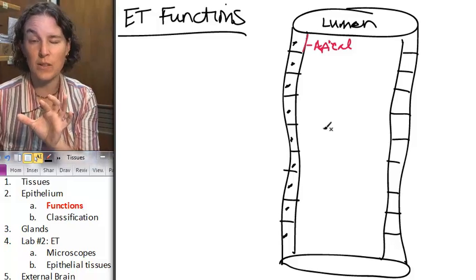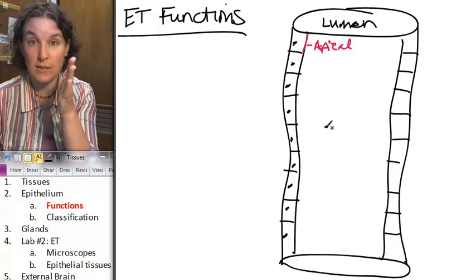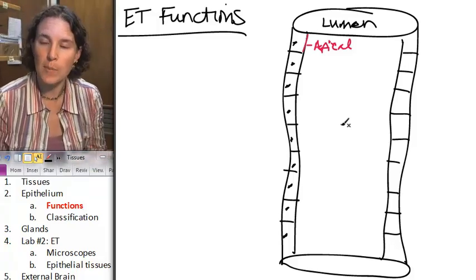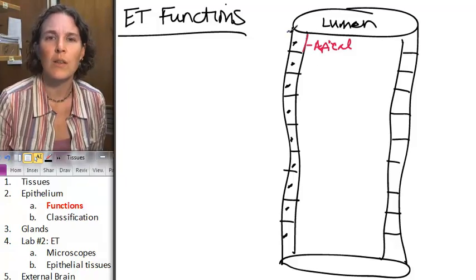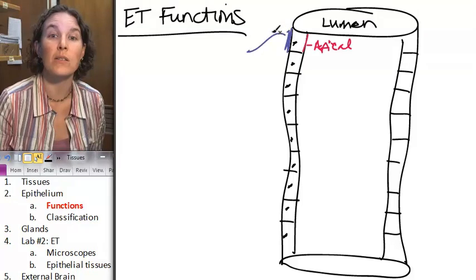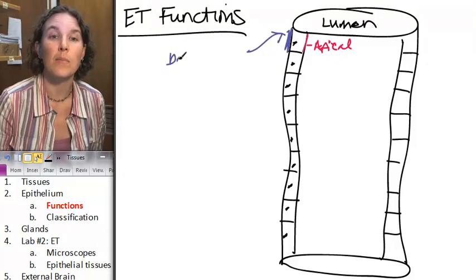The side of the epithelial tissue that is touching the space is called the apical edge. What was the other edge called? This edge over here was the basolateral side of the cell. Basolateral.